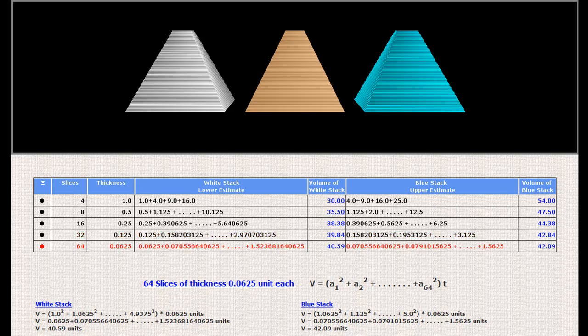With 64 slices, these values are 40.59 cubic units and 42.09 cubic units.